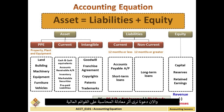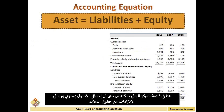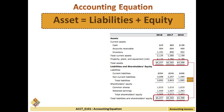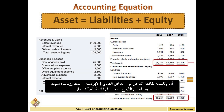Now let's see the effect of the accounting equation on the financial statements. In the balance sheet, we can see that total assets equal total liabilities and equity. For the income statement, the net income — which is revenue minus expenses — flows into retained earnings in the balance sheet.